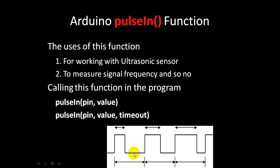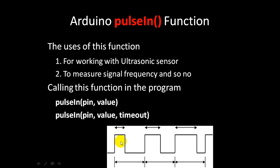Suppose we want to measure the off time of this signal. We want to measure it using pin 8, so we call pulseIn and give pin number 8. The value is defined according to which state we want to measure. A digital signal can be separated into on time and off time - that is HIGH or LOW. So if we want to measure the low time, how many microseconds this signal is being LOW, we give pin 8 and LOW.